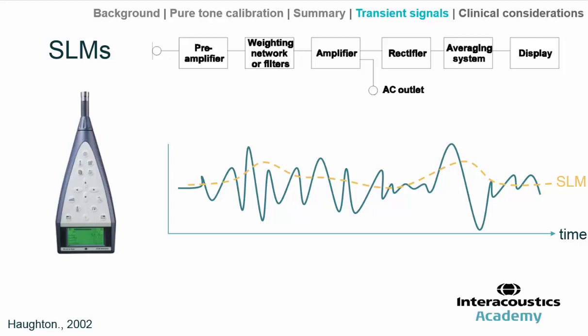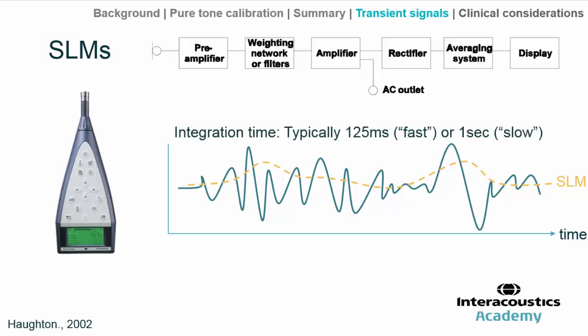There are two commonly used averaging windows or integration periods: the fast period with averaging over 125 milliseconds, and the slow period over one second. But we have a challenge when it comes to transient signals, which we're interested in for many audiological tests such as evoked potentials, because many transient signals are much shorter than even the minimum 125 millisecond integration period.